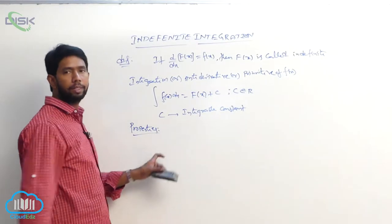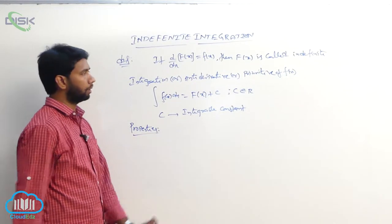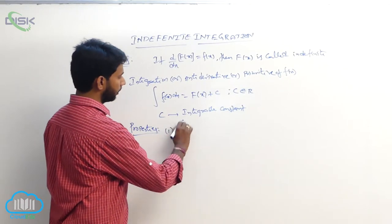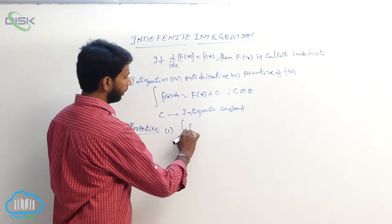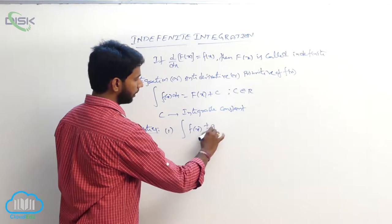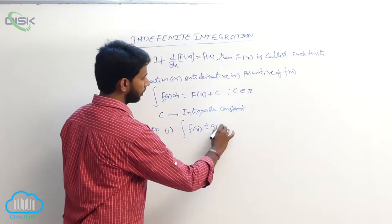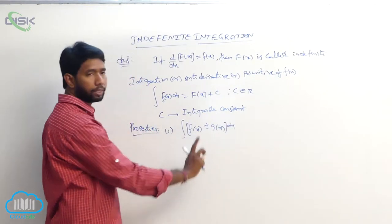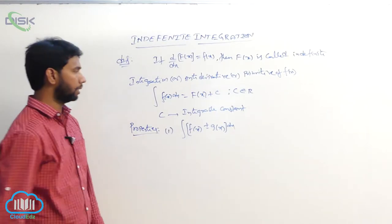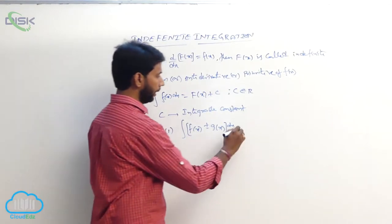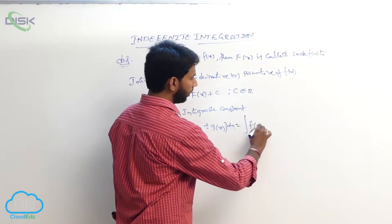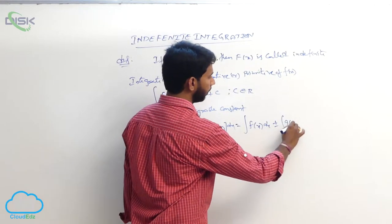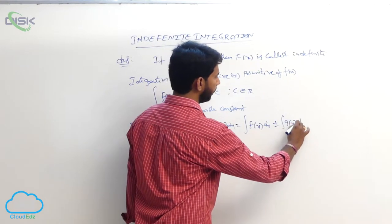If f of x and g of x are two integrable functions, then the first property is: integral of f of x plus or minus g of x dx is equal to integral of f of x dx plus or minus integral of g of x dx.